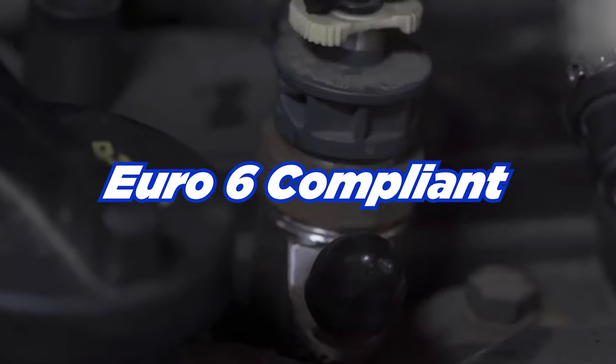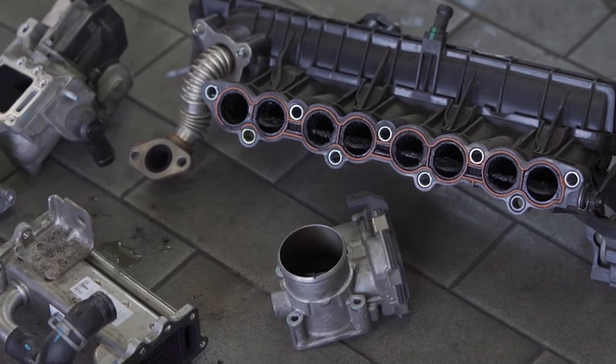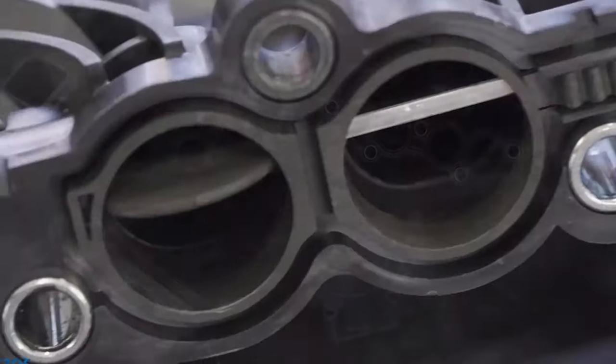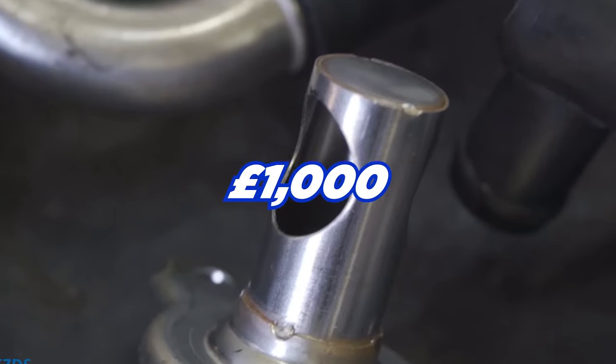In this situation, Euro 6 compliant automobiles are considered to be of this category. Vehicles that do not have an EGR valve or a diesel particulate filter installed will fail their MOT test and their owners may face a hefty fine of up to 1,000 pounds if they are found to have removed either component.